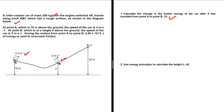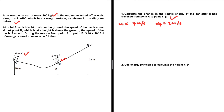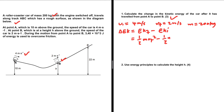For part one, calculate the change in kinetic energy. At point A we have an initial velocity of 4 meters per second, and at point B we have a final velocity of 2 meters per second. The mass of the roller coaster car is 200 kg. With these three variables we can calculate the change in kinetic energy, because ΔKE equals the final kinetic energy minus the initial kinetic energy: ½mv_f² − ½mv_i².